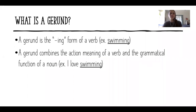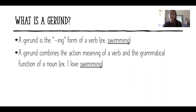What is a gerund? A gerund is the -ing form of a verb — for example, 'swimming.' A gerund combines the action meaning of a verb and the grammatical function of a noun. For example, 'I love swimming.' Now this might be confusing, because we know that when we see -ing, often that is the continuous or progressive form of a verb. However, there are some times when we see -ing words that are actually not verbs.